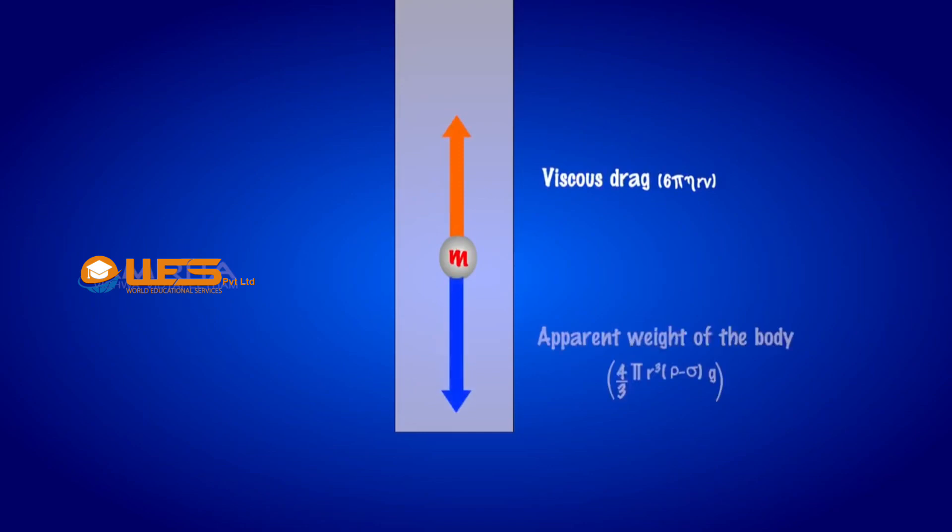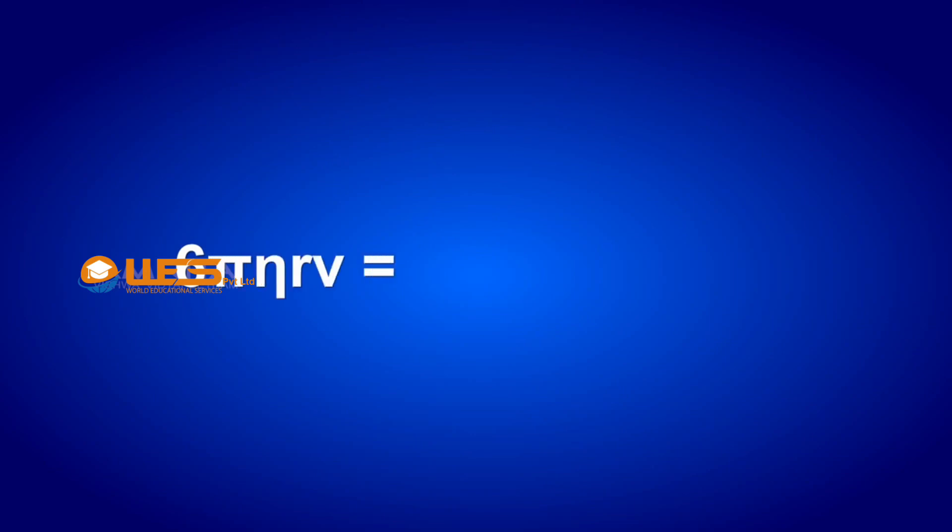Then the upward force due to viscosity which is given by Stokes law is balanced by the downward force due to the apparent weight of the body in the liquid. That is, 6πηrv equals 4/3 πr³(ρ - σ)g.